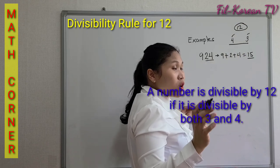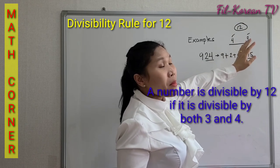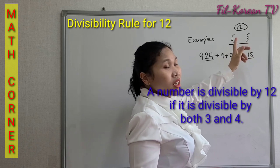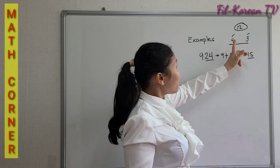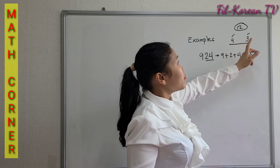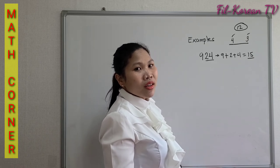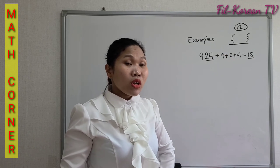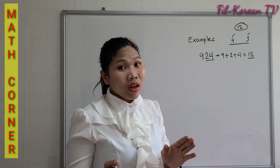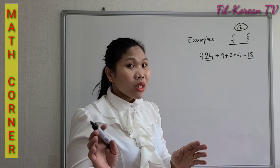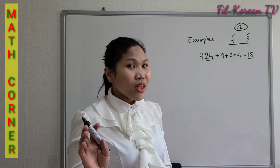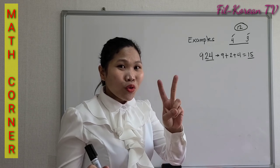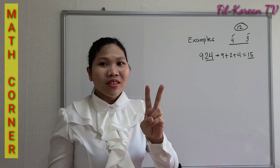The two conditions must be present. The number must be divisible by 4 and by 3. If a number is divisible only by 4 but not by 3, that number is not divisible by 12.